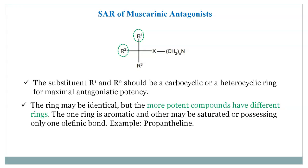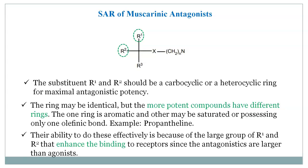The R1 and R2 rings may be identical, but potency increases if they are different rings — one ring being aromatic and the other saturated or possessing only one double bond. An example is propantheline. Larger R1 and R2 groups enhance receptor binding since antagonists are larger than agonists, forming a very good complex with the receptor.